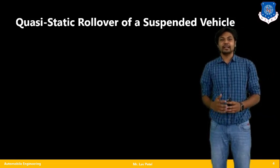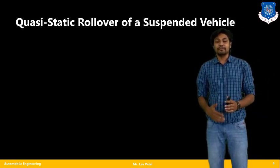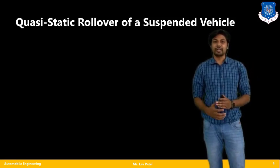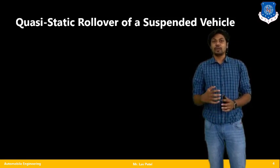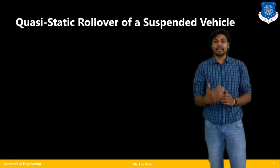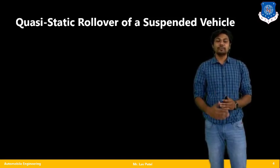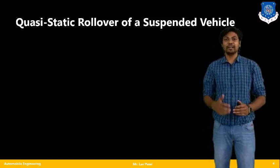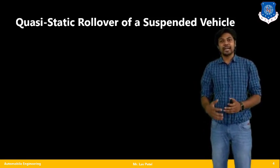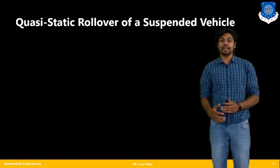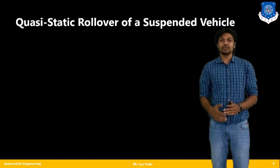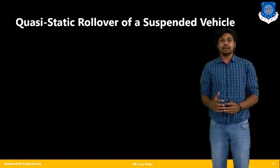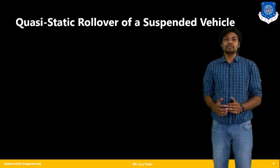First, let us remind ourselves about rollover. If the vehicle is moving on a highway or normal road and due to mechanical damage of the road or mechanical failure of the vehicle, the vehicle is about to roll greater than 90 degrees to the side — that is called a rollover maneuver. We have seen many maneuvers like accelerating, braking, cornering, turning, and rollover.